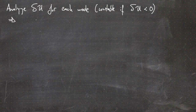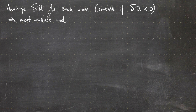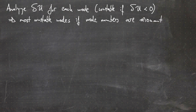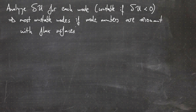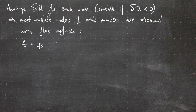When you do this analysis, you find that the most unstable modes occur if the mode numbers are resonant with the flux surfaces. Being resonant with a flux surface means that m/n equals the safety factor q_s, or equivalently n/m equals j-bar.